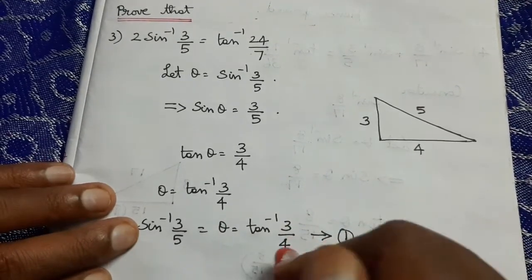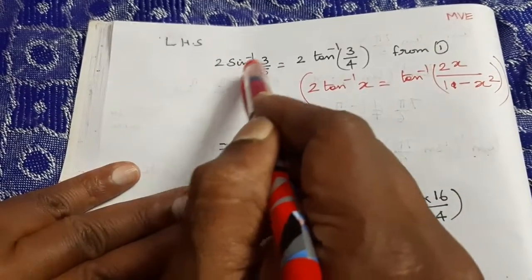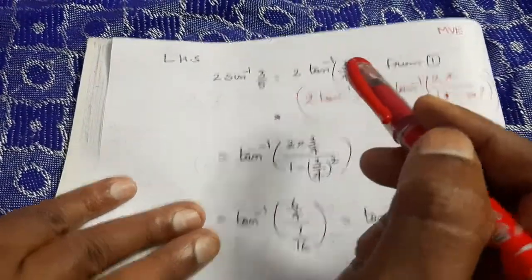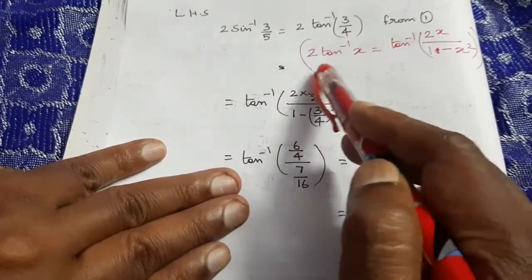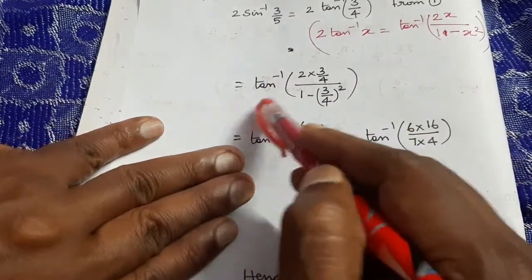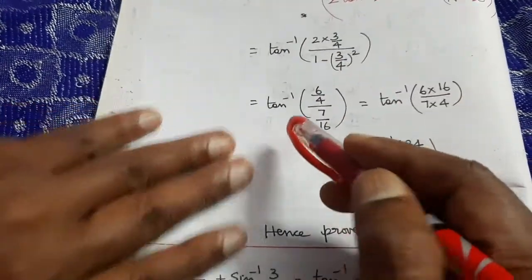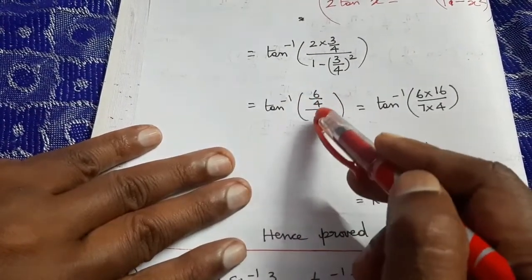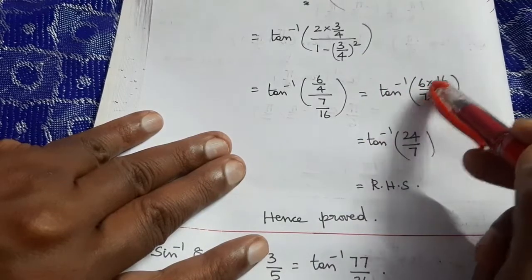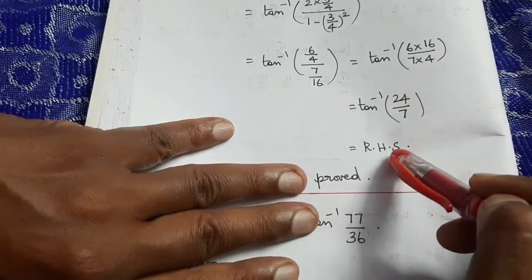Now, LHS = 2sin⁻¹(3/5) = 2·tan⁻¹(3/4). Using the formula 2·tan⁻¹(x) = tan⁻¹(2x/(1 − x²)), substitute x = 3/4: tan⁻¹(2·(3/4) / (1 − (3/4)²)) = tan⁻¹((6/4) / (7/16)) = tan⁻¹((6/4)·(16/7)) = tan⁻¹(24/7) = RHS. Hence proved.